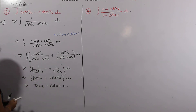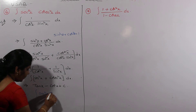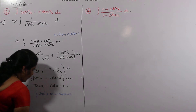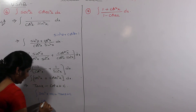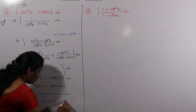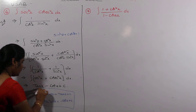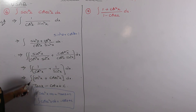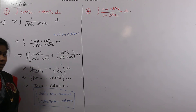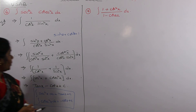Applying these formulas: integral of secant squared x dx equals tan x plus C, and integral of cosecant squared x dx equals minus cot x plus C. So applying both formulas, the integral of secant squared x is tan x and integral of cosecant squared x is minus cot x. After integration we add the constant plus C. This problem is completed.